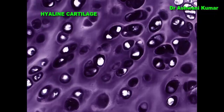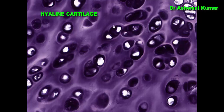Looking at the chondrocytes in the hyaline cartilage section: the cells within lacunae occur either singly or in cell nests. Around these cell nests, you can appreciate the territorial matrix, which is the basophilic intensely blue area. The matrix between isogenous groups is the interterritorial matrix, which is less intensely stained.